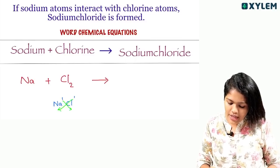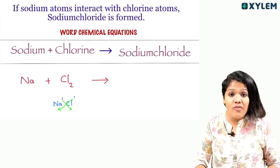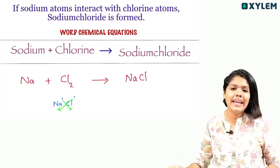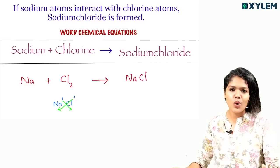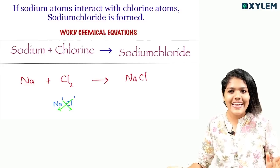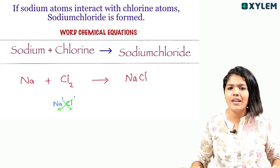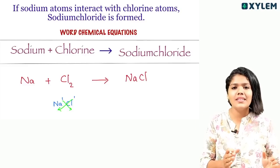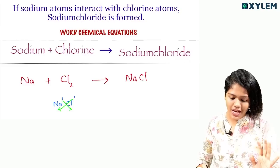Na valency is 1, Cl valency is 1. We need to simplify. NaCl — this is the simplified formula. This is how we apply the cross method.